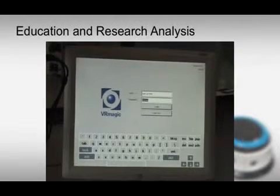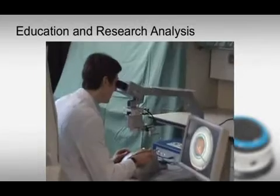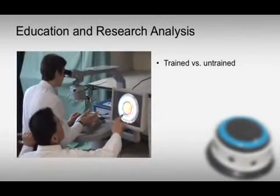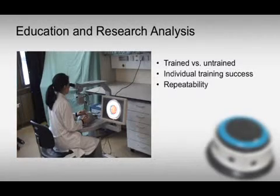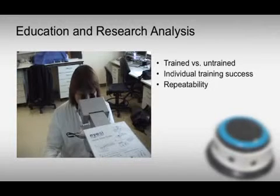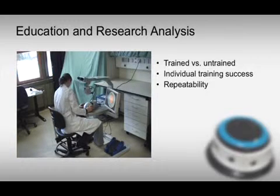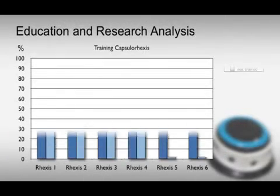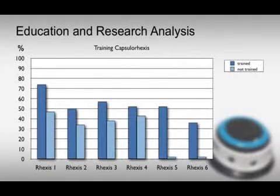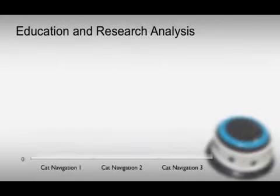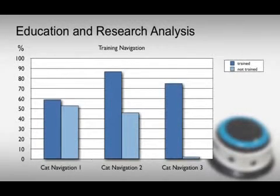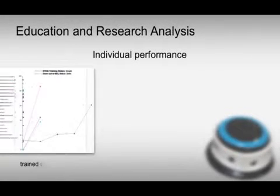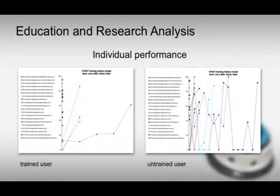We analyzed the IC training in our department, looking especially at the performance of trained versus untrained users, individual training success, and performance repeatability. In this graph, different levels of capsulorhexis training are shown. The trained users showed higher values in all levels compared to the untrained users, similar to the course of cataract navigation. These findings can also be seen in the individual performance graphs, indicating better results for already trained users.